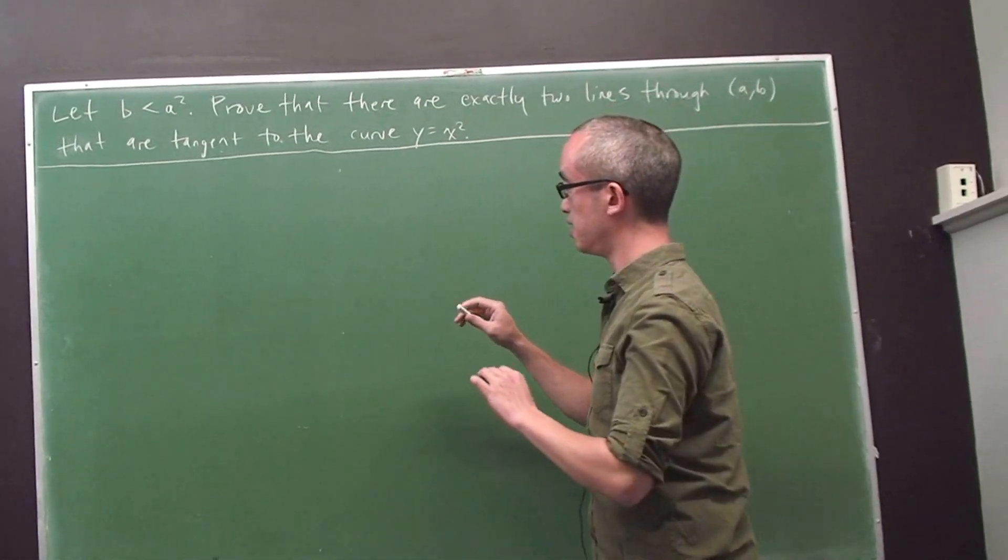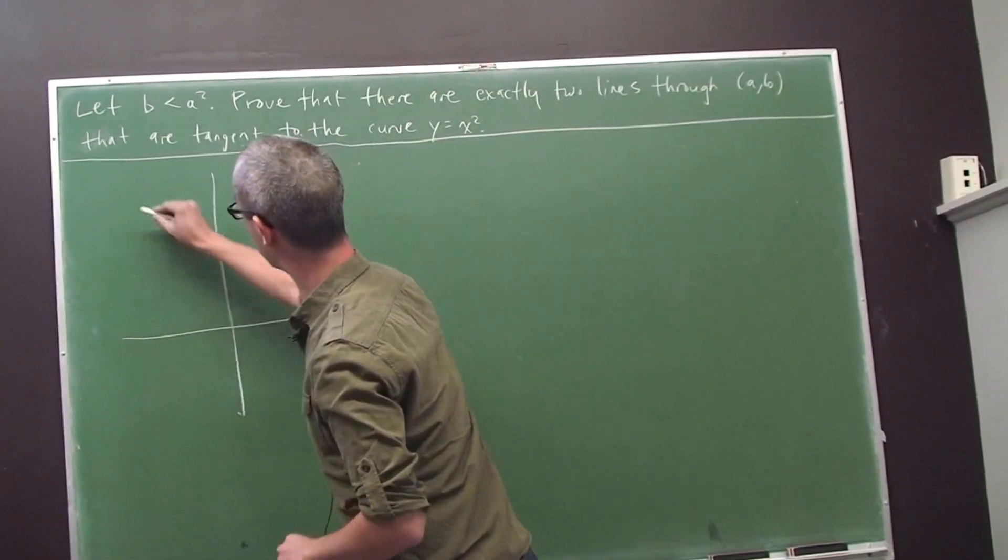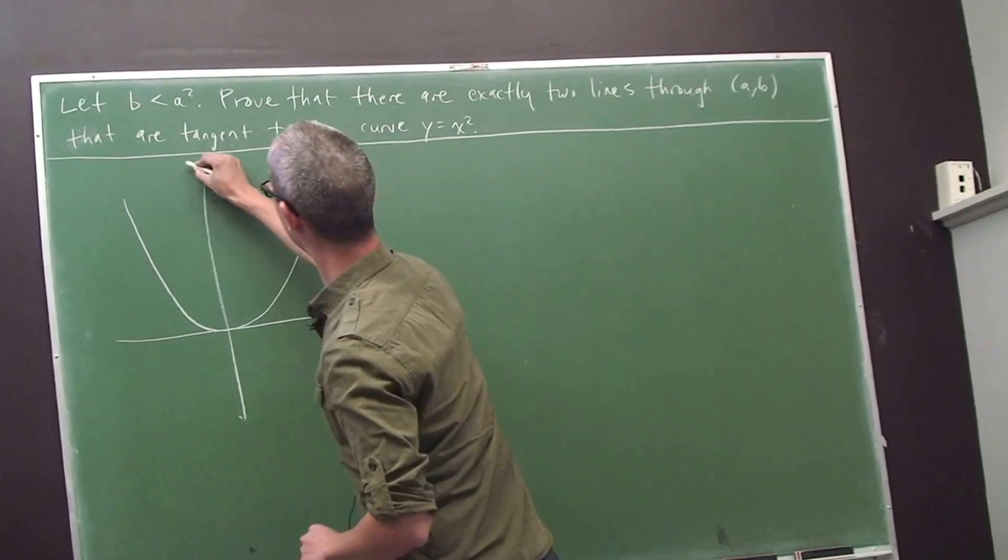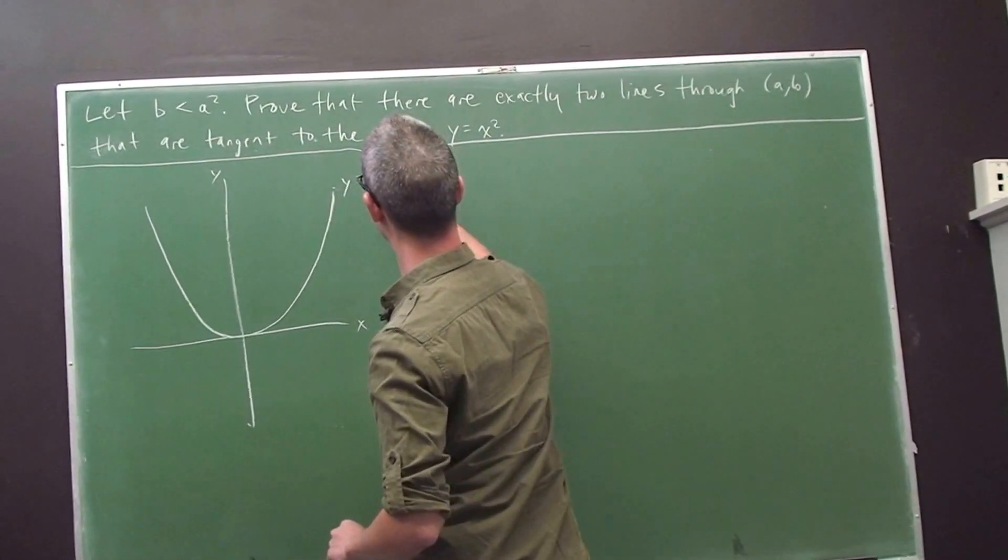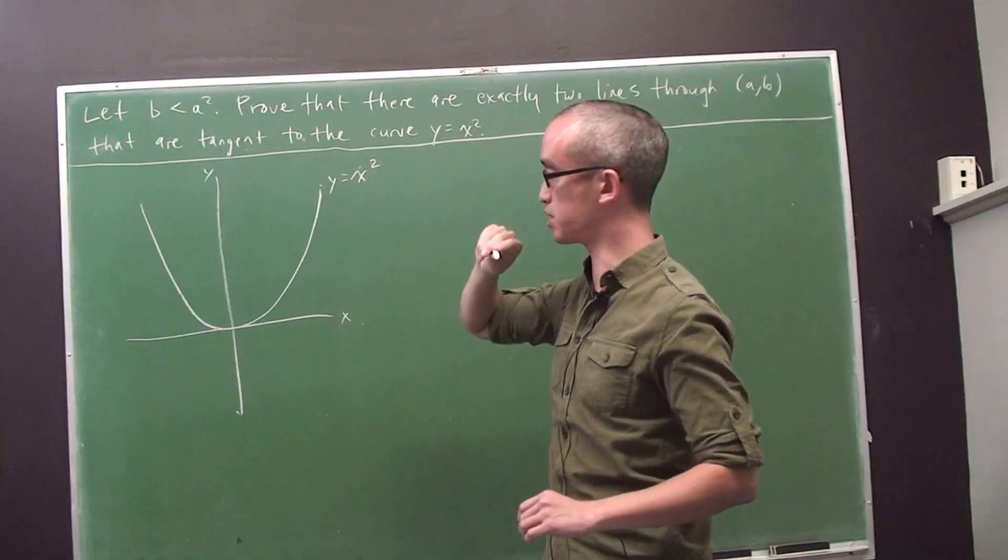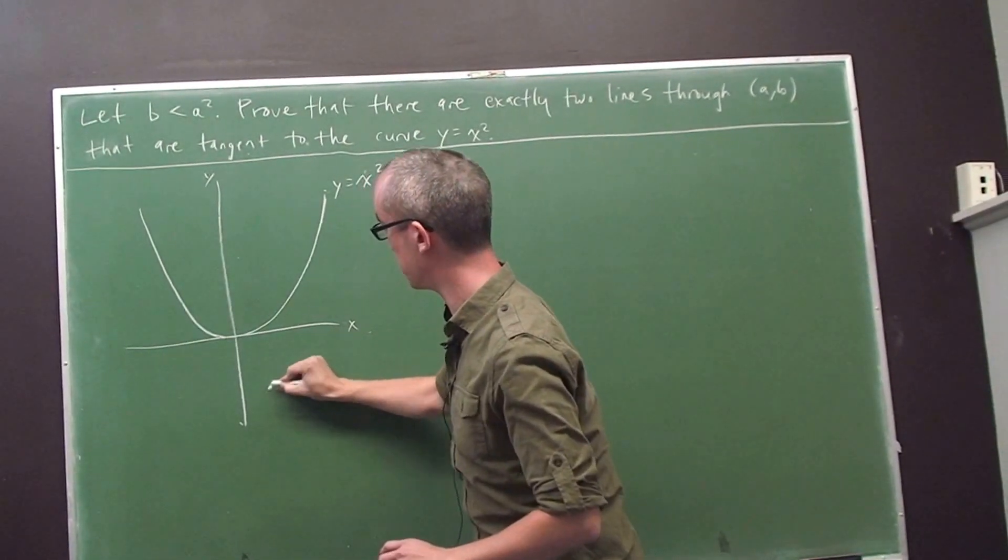So the first thing I'm going to do is draw a picture of the parabola itself. So y equals x squared looks something like that. And the point (a, b), because we're told that b is less than a squared, that means that point is somewhere below the parabola. Let's say here.